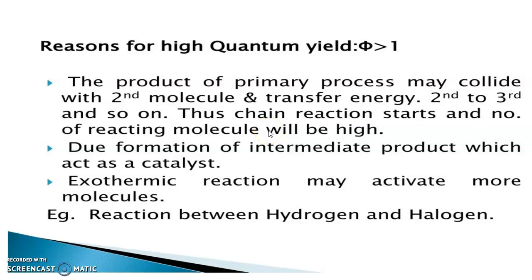This is the reason for high quantum yield. Sometimes, due to the formation of intermediate products, which acts as a catalyst. Catalyst is nothing but which alters the rate of reaction. Here, it increases the rate of reaction, the intermediate product. Hence, there will be a chance of getting a high quantum yield.